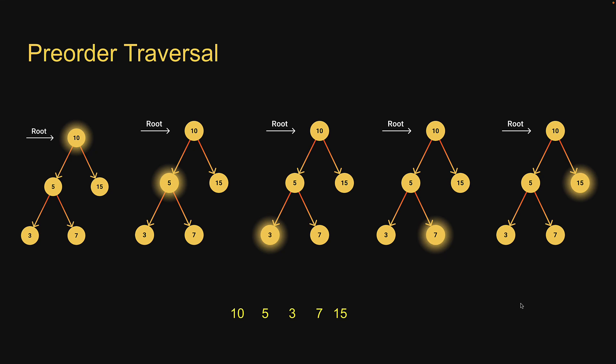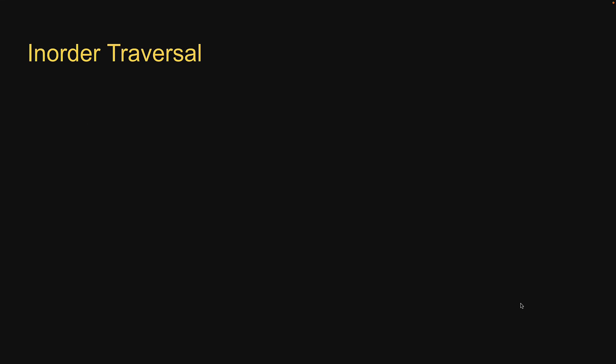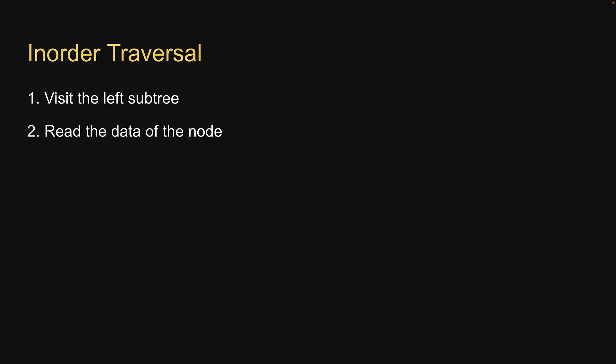Now let's proceed to in-order traversal, which is a slight variation of pre-order. The algorithm for in-order traversal is as follows: visit the left subtree, read the data of the node, visit the right subtree. Let's understand these steps with an example.